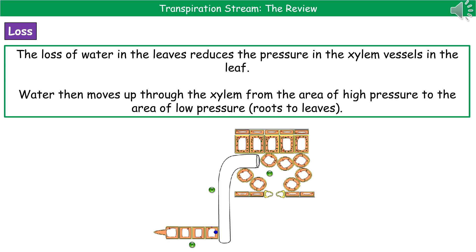As water is lost from the leaves, there is a reduced pressure in the xylem vessels in the leaf. So water then moves up through the xylem from the area of high pressure to the area of low pressure — from the roots where there's high pressure to the leaves where there's low pressure — moving down the pressure gradient.